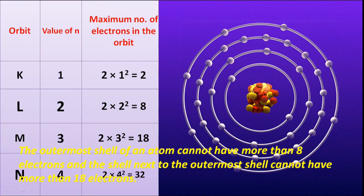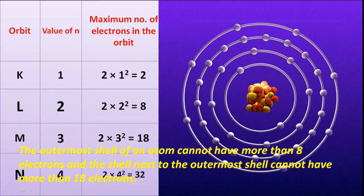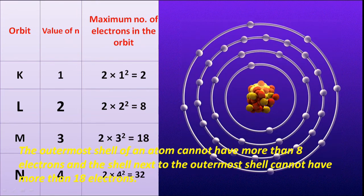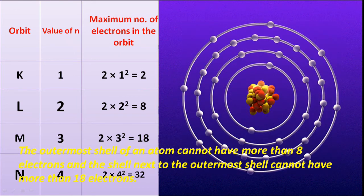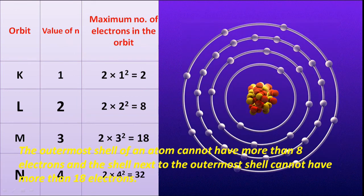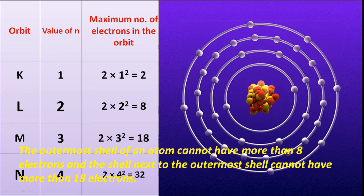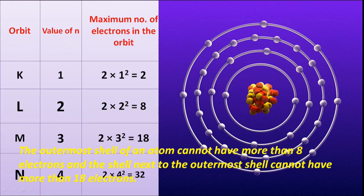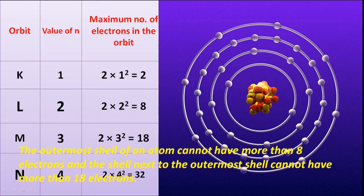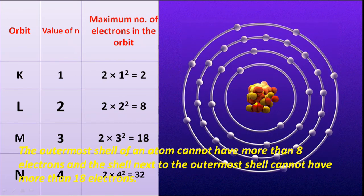For orbit K, n = 1, maximum number of electrons 2 × 1² = 2. For L, n = 2, 2 × 2² = 8 electrons. For M, n = 3, 2 × 3² = 18 electrons. For N, n = 4,